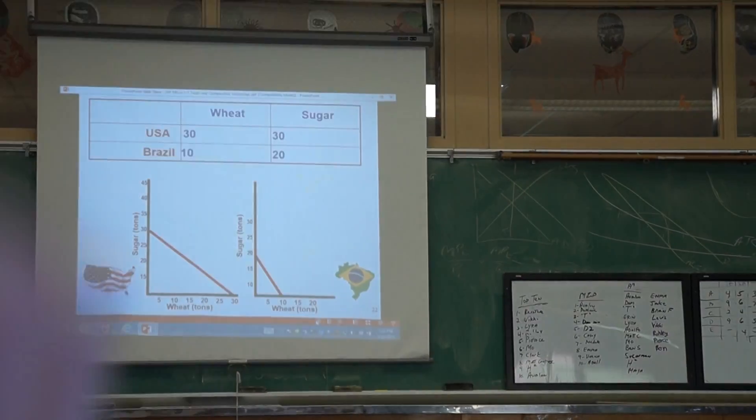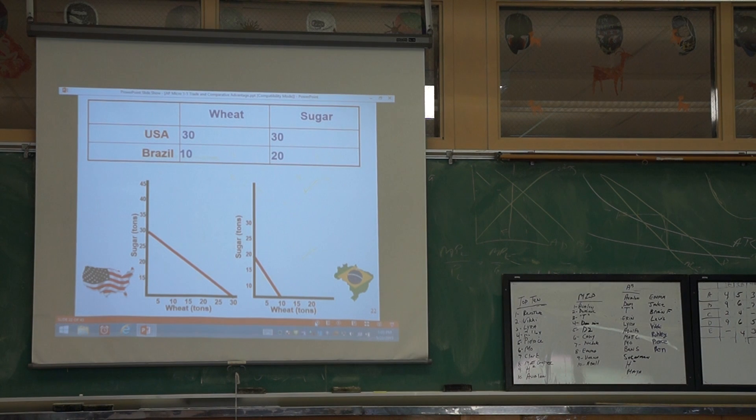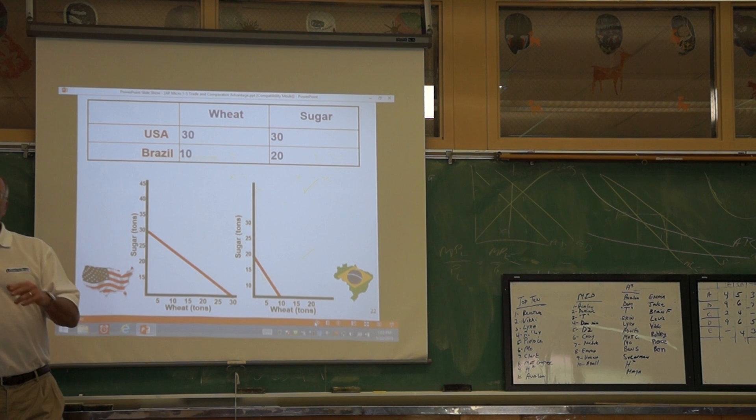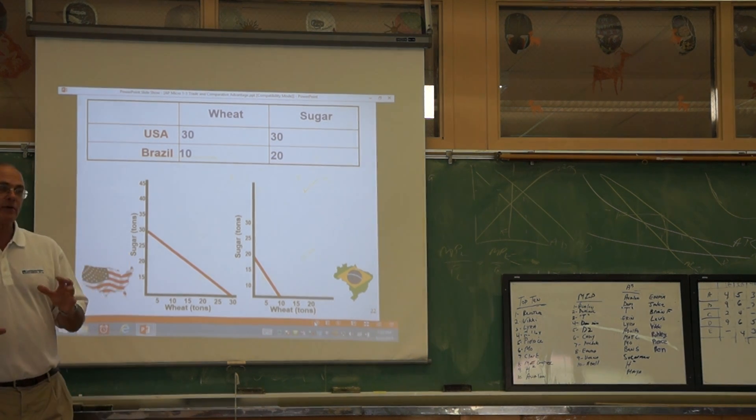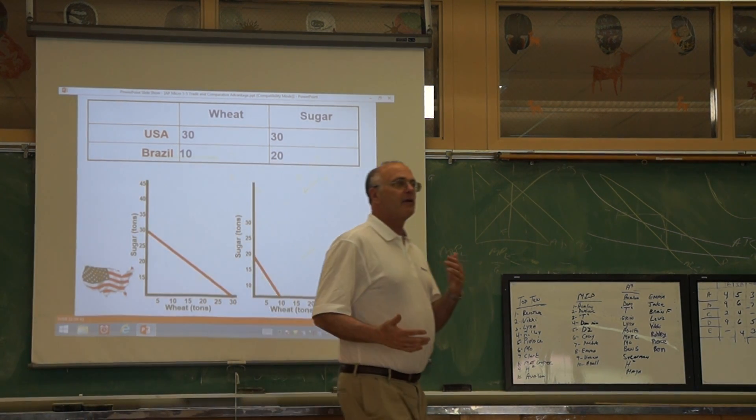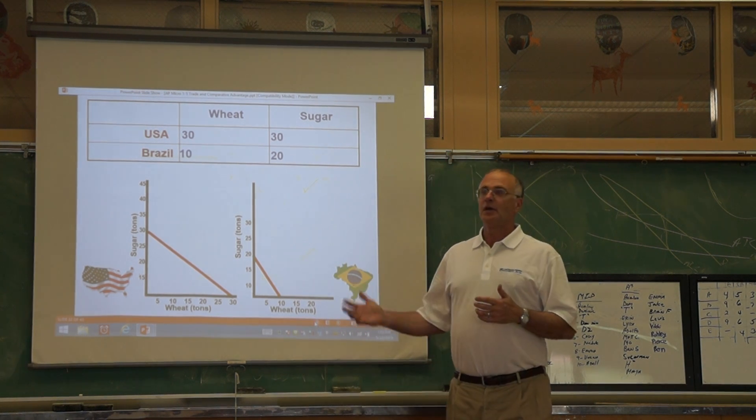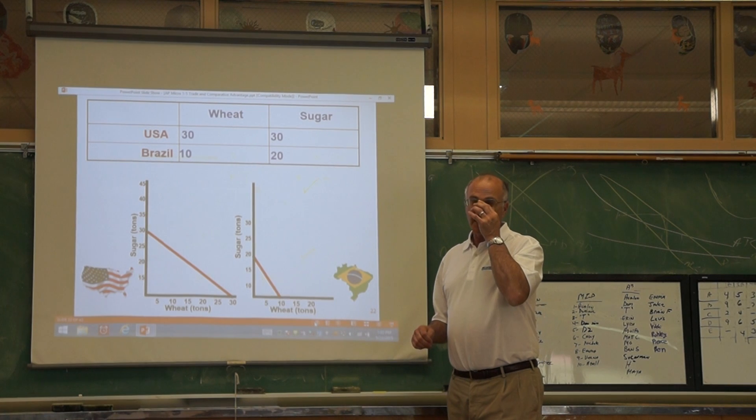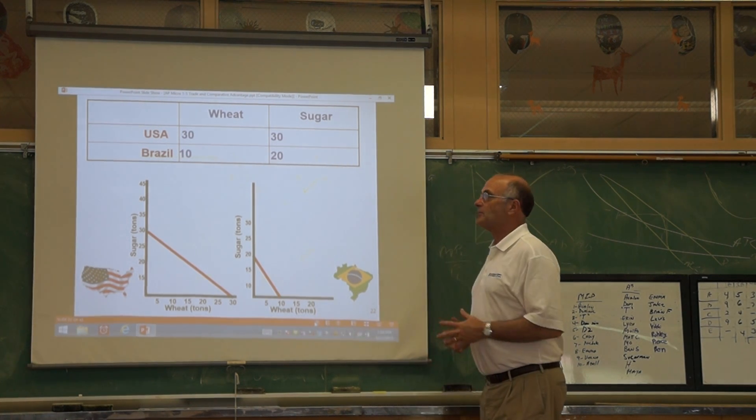As we talked about in the production possibilities curve, there are three ways to shift the curve, and one of them is trade. We'll talk about trade a lot more in macro than micro. Comparative advantage and absolute advantage in picking who trades what is part of the micro unit, and it will whet our appetite.